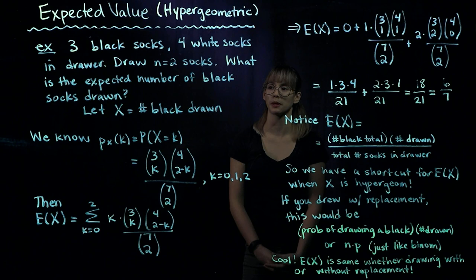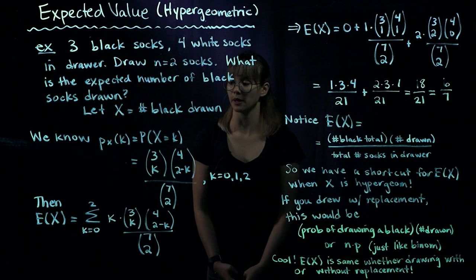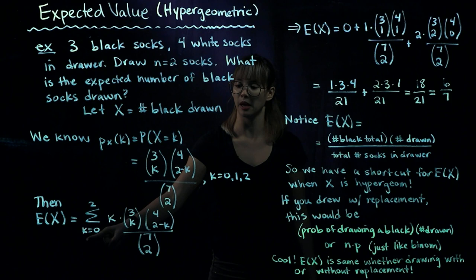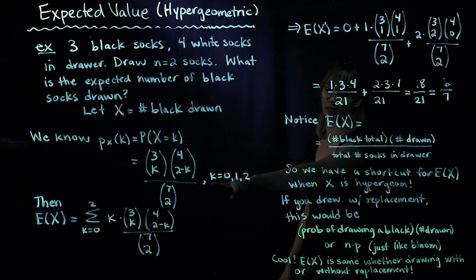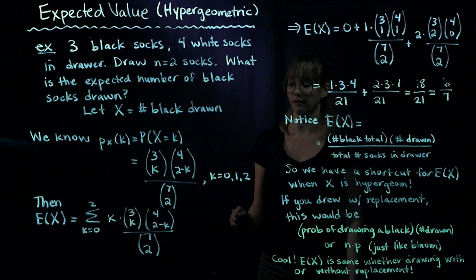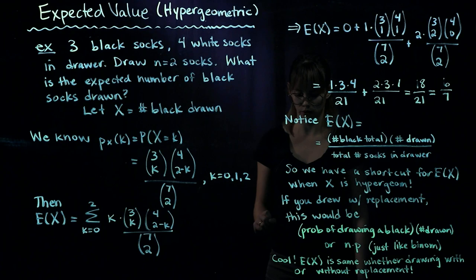We're interested in the expected number of black socks drawn, so let's write out our sum using the definition of expected value. The expected value of X is the sum from K equals zero to two, since K can take on values zero, one, and two, of K times the PMF evaluated at K: three choose K times four choose two minus K, divided by seven choose two.